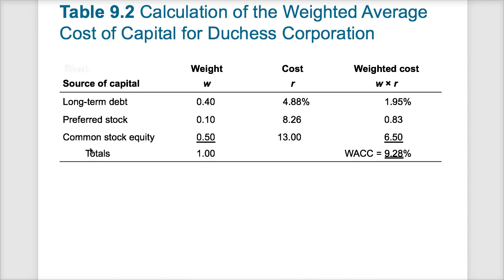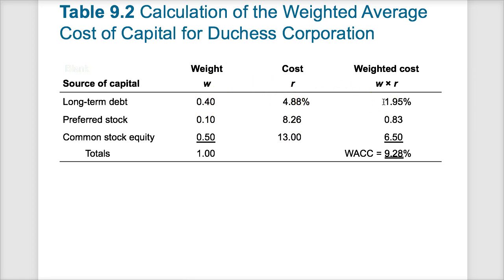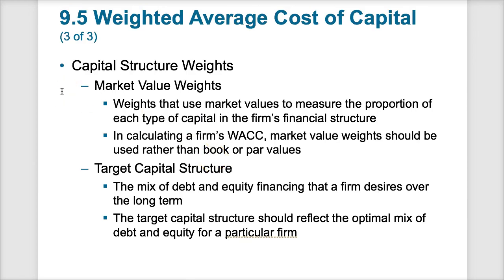Here's a numerical example: long-term debt is 40 percent of the portfolio, preferred stock is 10 percent, and equity is 50 percent. Multiplying 40 percent by its rate gives a weighted contribution of 1.95 percent; preferred stock contributes 0.83 percent; and common stock contributes 6.5 percent. Adding these three together gives a weighted average cost of capital of 9.28 percent. It's similar to a grade point average — a weighted average where sources are not all equal.